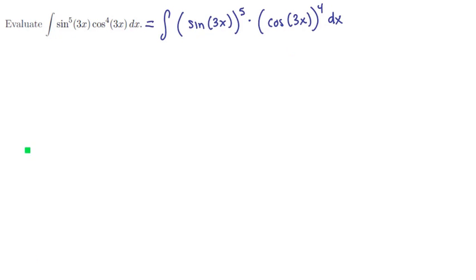Now note that this is a product integral of sines and cosines, so we want to use a substitution. There's two things to try. We used sine last time, so let's give cosine a try this time. And we'll let u be cosine of 3x.